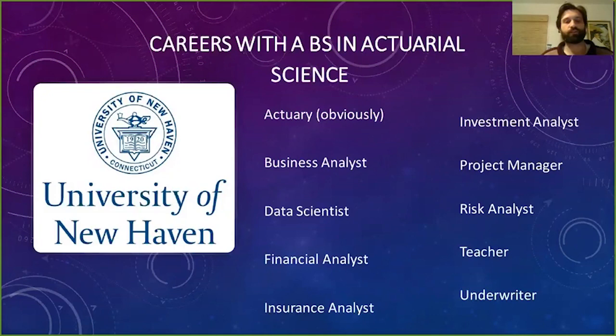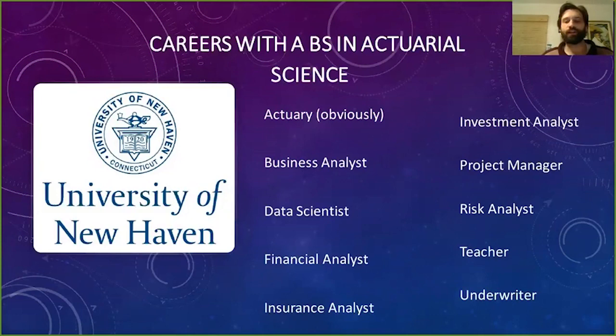So what are various careers that you can do with a degree in actuarial science? Well, you can be an actuary — that's the most obvious choice — but there are quite a few other options available to you. You can be an analyst in business, finance, or insurance. A degree in actuarial science also prepares you to be a data scientist, a project manager, or a teacher. There are actually quite a few different careers that can stem from a degree in actuarial science.